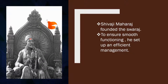Shivaji Maharaj founded Swaraj. After his coronation, Maharaj accomplished Takshin Digvijay — the conquest of the south. The Swaraj expanded to comprise large areas of Nashik, Pune, Satara, Sangli, Kolhapur, Sindhudurg, Ratnagiri, Raigad, and Thane districts of Maharashtra. It also included parts of Andhra Pradesh and Tamil Nadu.